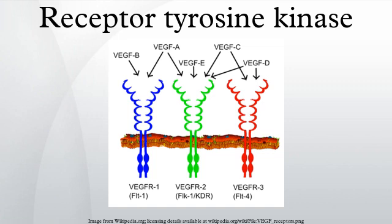A gene for a fifth FGFR protein, FGFR5, has also been identified. In contrast to FGFRs 1 to 4, it lacks a cytoplasmic tyrosine kinase domain, and one isoform, FGFR5γ, only contains the extracellular domains D1 and D2.